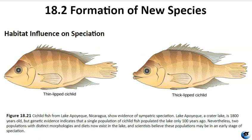Habitats can influence speciation in ways other than polyploidy. Consider a fish species living in a lake — if the population grows and competition for food increases, some fish may discover a new food source at a different depth of the lake. Over time, these fish will interact more with each other and breed together. Their offspring would continue this pattern, staying separate from the original population. If they remained isolated long enough, sympatric speciation can occur as they accumulate more genetic differences. In Lake Victoria, Africa, cichlid fish have undergone hundreds of sympatric speciation events, with fish in the same area developing different traits and now in the process of speciation.